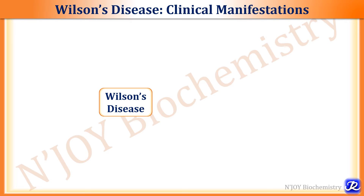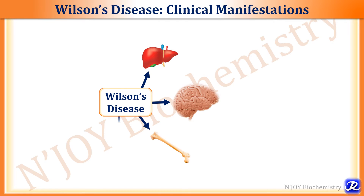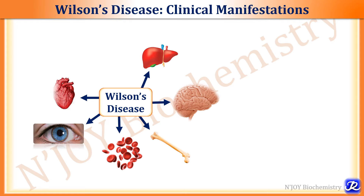In Wilson's disease, due to mutation in ATP7B, incorporation of copper into ceruloplasmin is not possible, so ceruloplasmin and serum copper levels will be low. The copper tends to get deposited in many organs, most importantly the liver and brain. Wilson's disease affects liver, brain, bones, RBCs, eyes, heart, and kidneys.